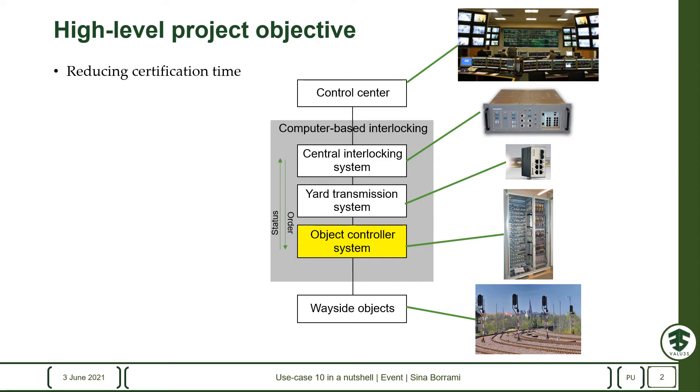In the railway control system, we have a hierarchy of systems from control center, computer interlocking system, to the wayside objects which you can see in the bottom.